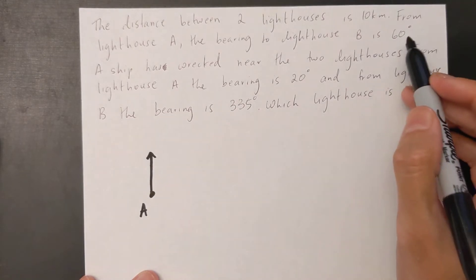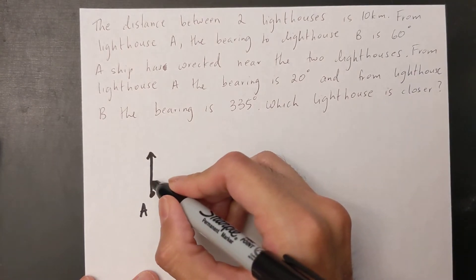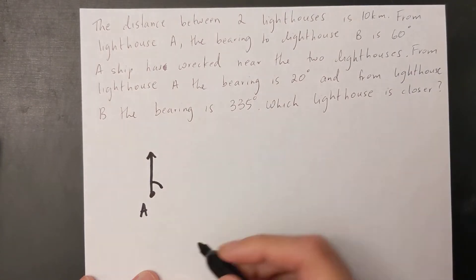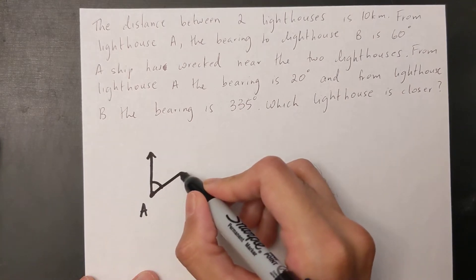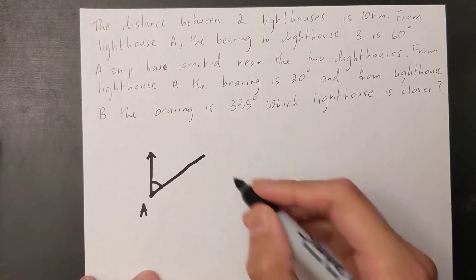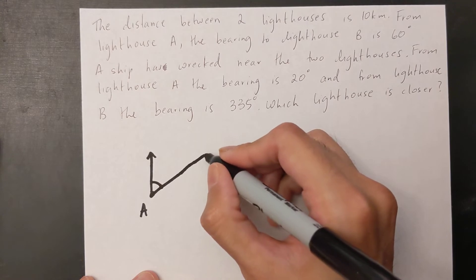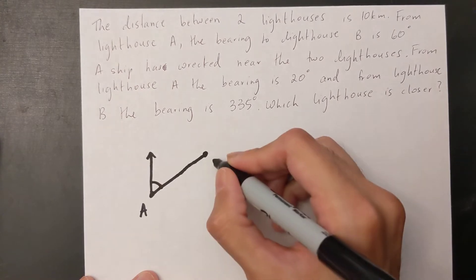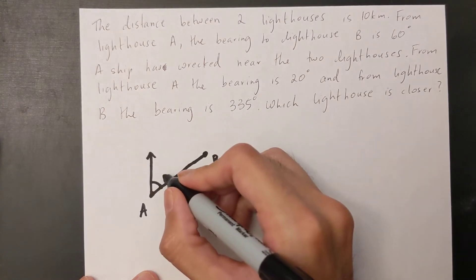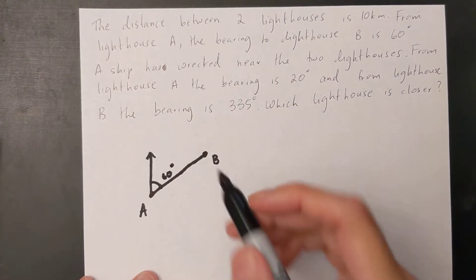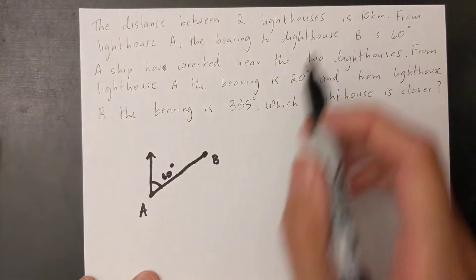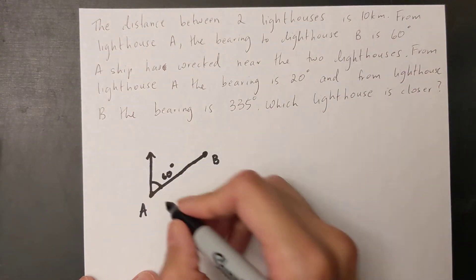So my angle is 60 degrees, clockwise 60 degrees, and this goes towards lighthouse B. This angle here is 60 degrees. This distance, the distance from A to B, is 10 kilometers.